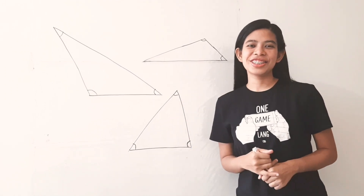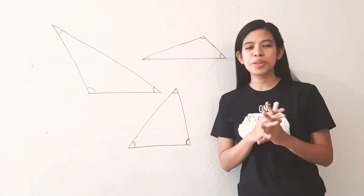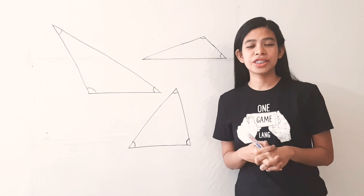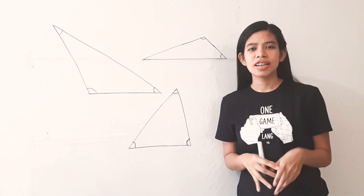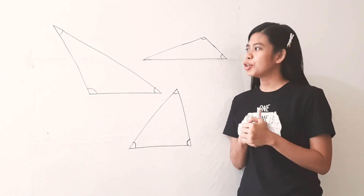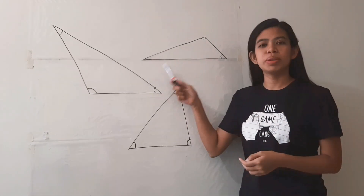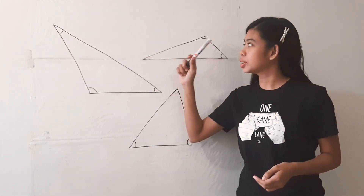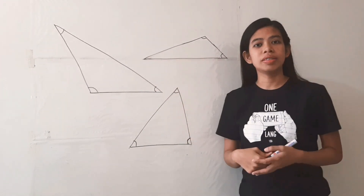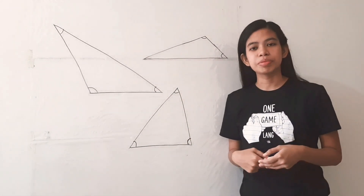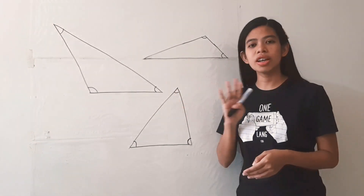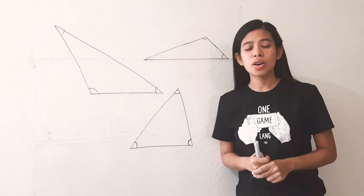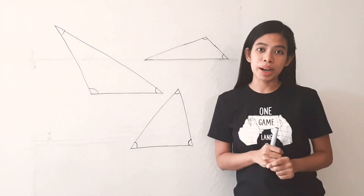Good day, learners. So, on the previous topics, you were asked to solve for right triangles. Now, what if you were asked to solve for oblique triangles? Meaning, there are obtuse and acute angles. So in this case, you cannot use the concept of Pythagorean theorem or SOH-CAH-TOA.